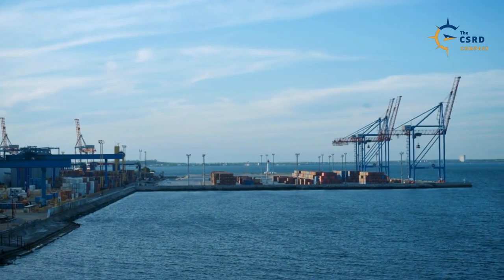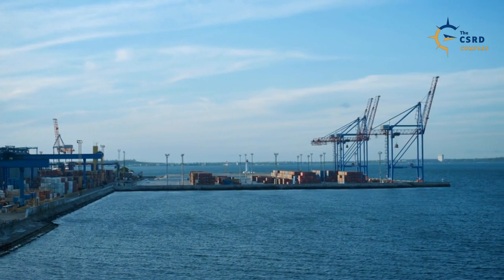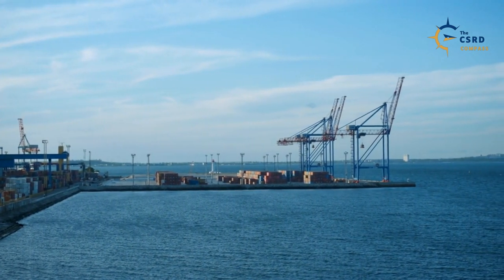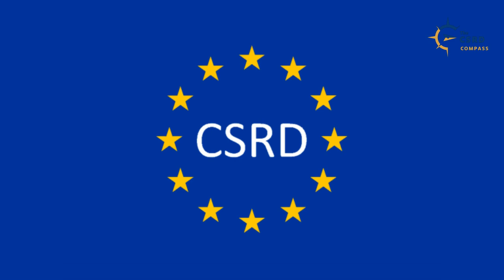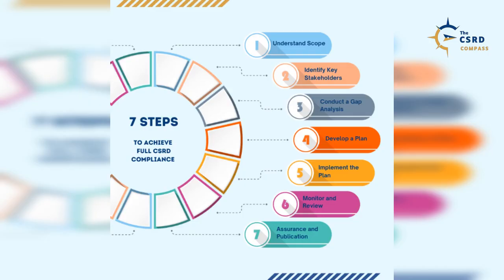In today's business world, sustainability reporting is not merely a trendy term but holds significant importance in the contemporary business landscape. If you're wondering how to implement the CSRD for your company, this quick guide will walk you through the process step-by-step. In this short video, we present 7 Steps to Achieve Full CSRD Compliance — a quick guide outlining the key actions and considerations for businesses to ensure compliance with the Corporate Sustainability Reporting Directive and embrace sustainable practices in today's evolving regulatory landscape.